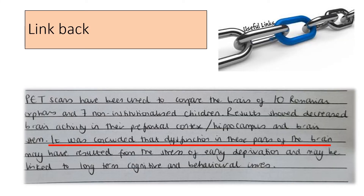Finally, looking again at the Romanian orphan studies question, these students outline their knowledge of brain scans and decreased activity in the prefrontal cortex — a great finding — but they're also linking back to the question: what does this show us about institutionalization? The link back to the question states it was concluded that this dysfunction in these parts of the brain, resulting from the early stress of deprivation, may be linked to long-term cognitive and behavioral issues. So they're giving a finding and then linking back to what we've learned about institutionalization as a result of the Romanian orphan studies.